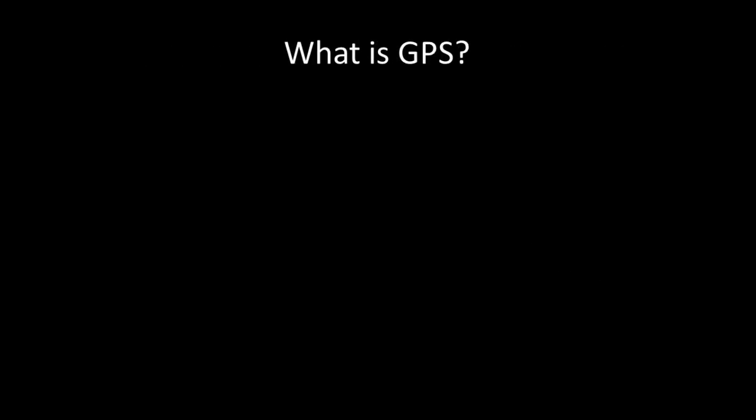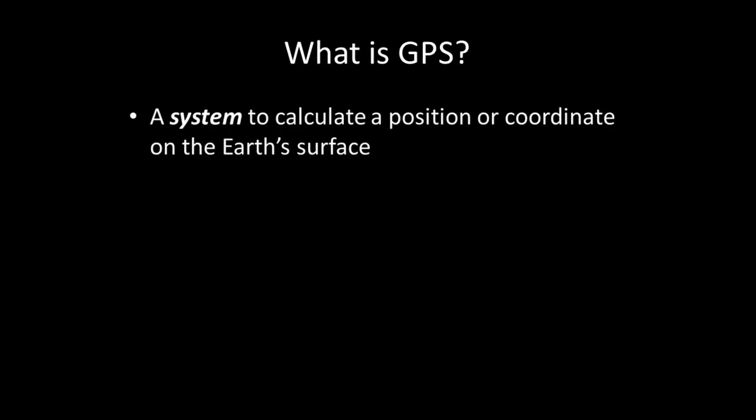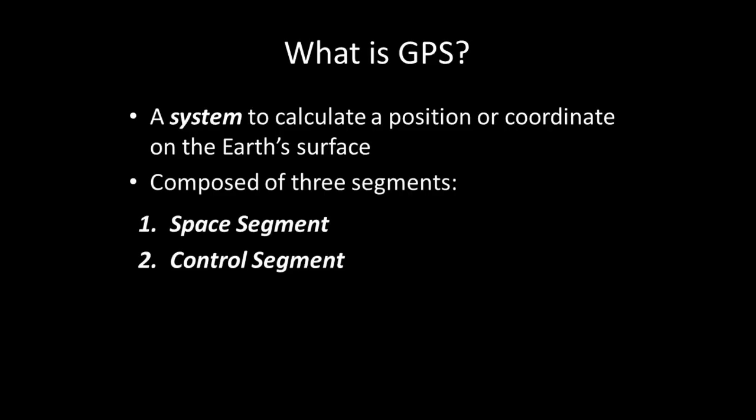A formal definition of GPS is that it is the system to calculate the position or coordinate on the Earth's surface. As it is a system, GPS is composed of three segments: the space segment, the control segment, and the user segment. In the following slides, I explain each segment in further detail.